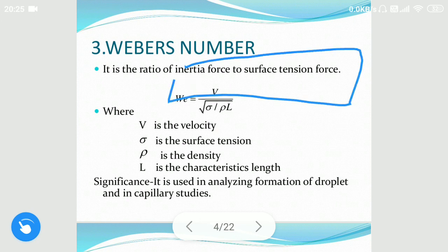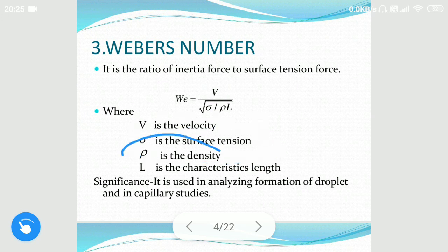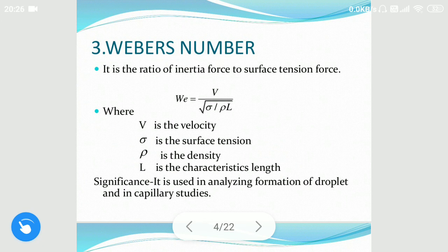The third is the Weber number. It is the ratio of inertial force to surface tension. Weber number is a very useful quantity for analyzing fluid flow where there is an interface between two different fluids. In the formula, V is the velocity, sigma is the surface tension, rho is the density, and L is the characteristic length. It indicates whether kinetic or surface tension energy is dominant.